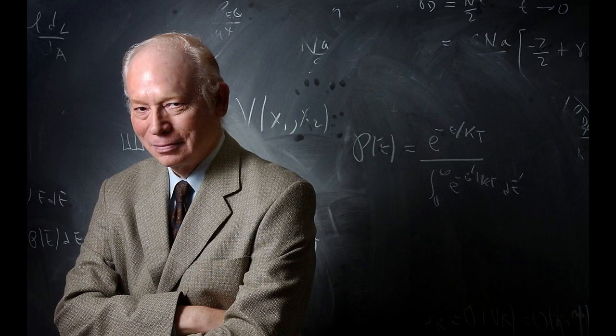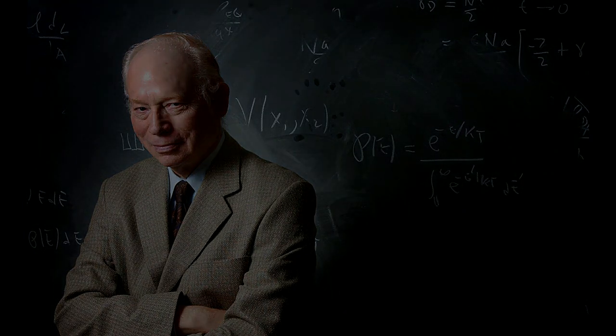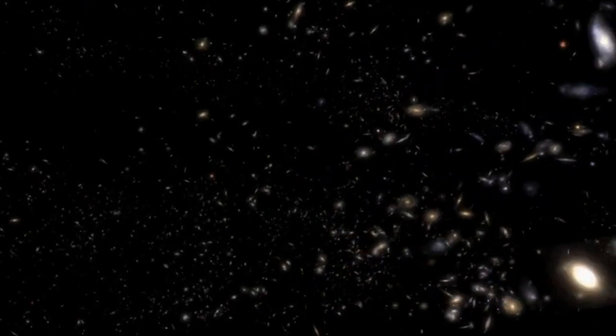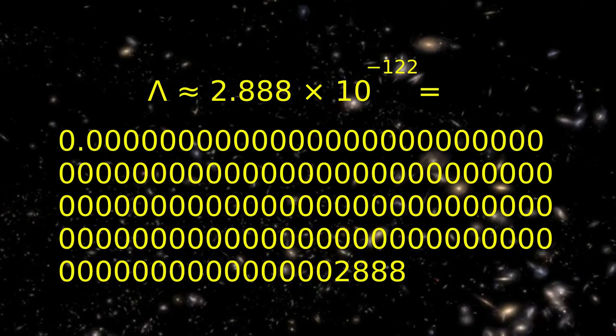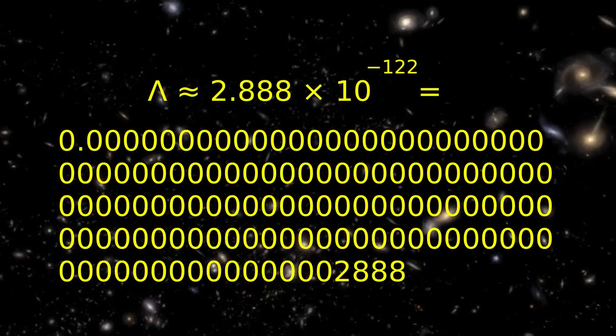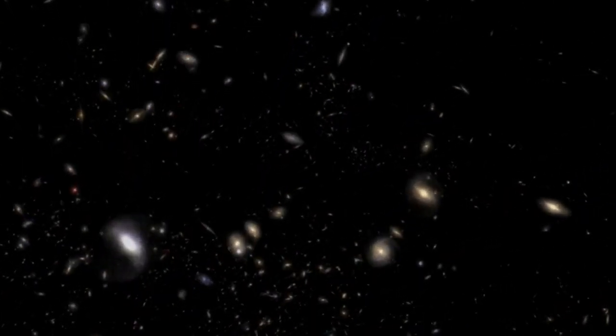In 1987, before lambda was measured, Steven Weinberg predicted that lambda must be non-zero positive and smaller than 10 to the power of minus 120. Weinberg reasoned that had lambda been negative, the universe would have gravitationally collapsed billions of years ago. Had instead lambda been slightly larger — say around 10 to the power of minus 119 — then the universe would expand too quickly for galaxies, stars, or planets to form. In 1998, two teams of astronomers studying distant supernovae confirmed Weinberg's prediction. They found that the expansion rate of the universe was not slowing down, but accelerating. The observed rate of accelerated expansion places lambda at 2.888 times 10 to the power of minus 122 — exactly in the range Steven Weinberg had predicted, 11 years earlier.